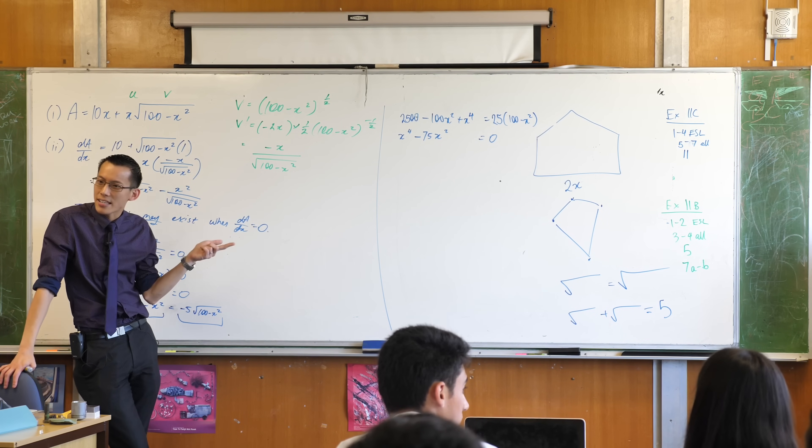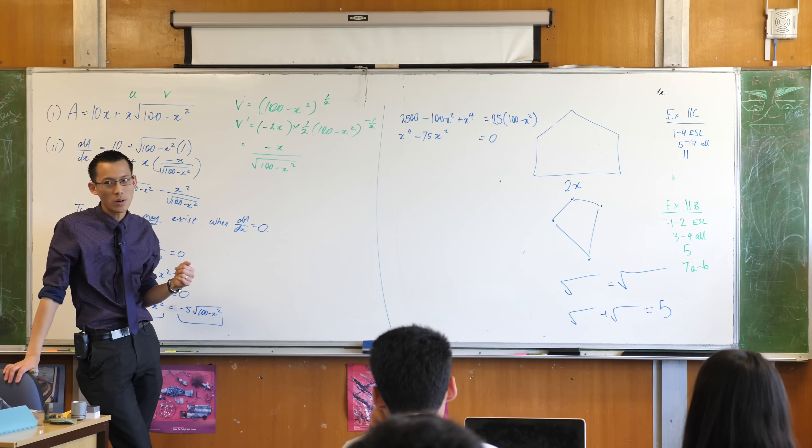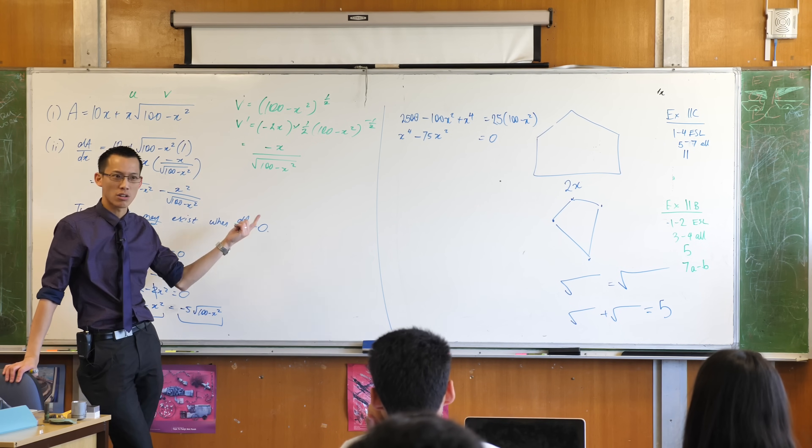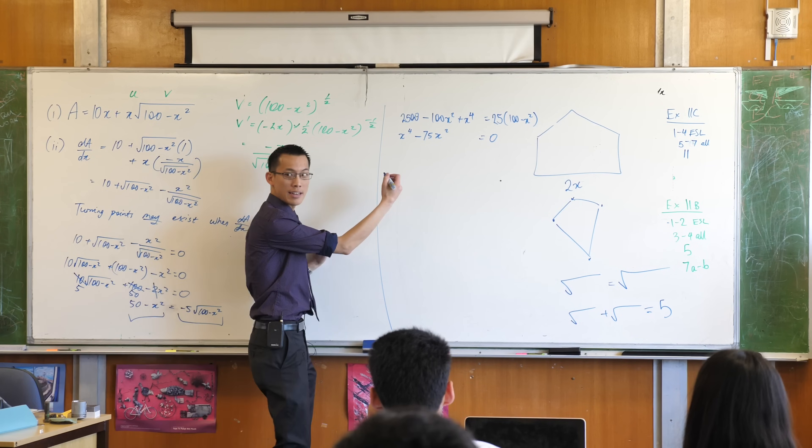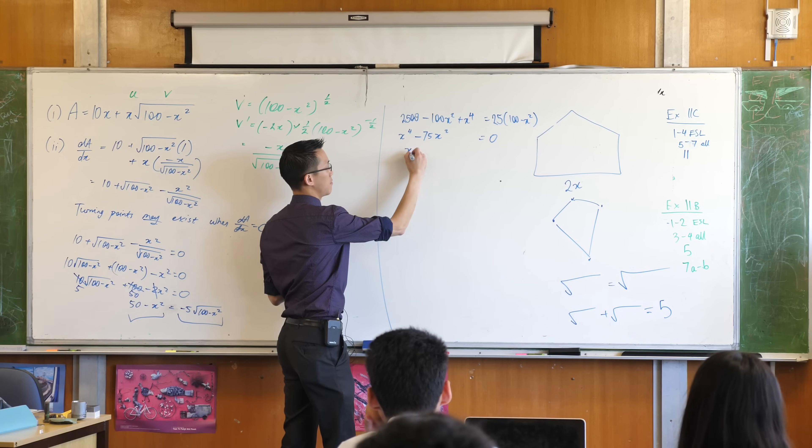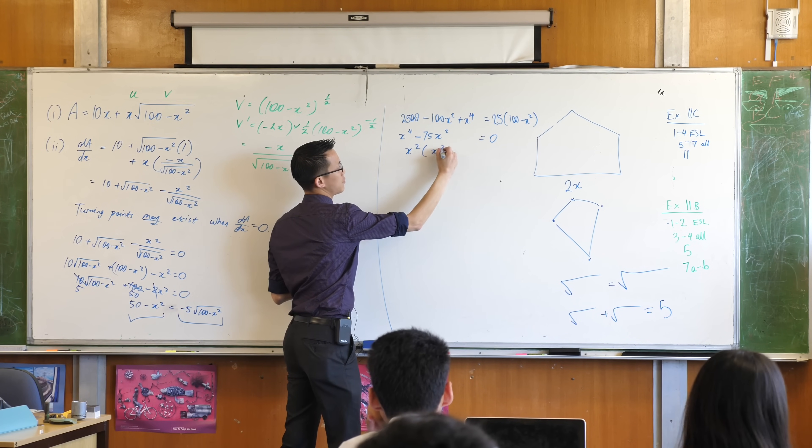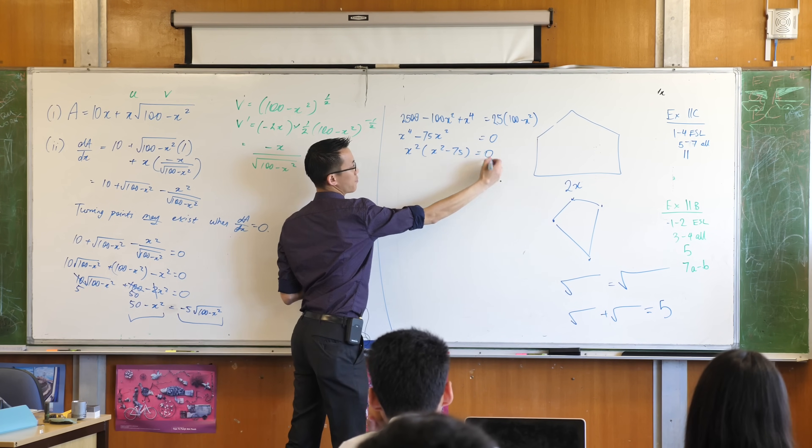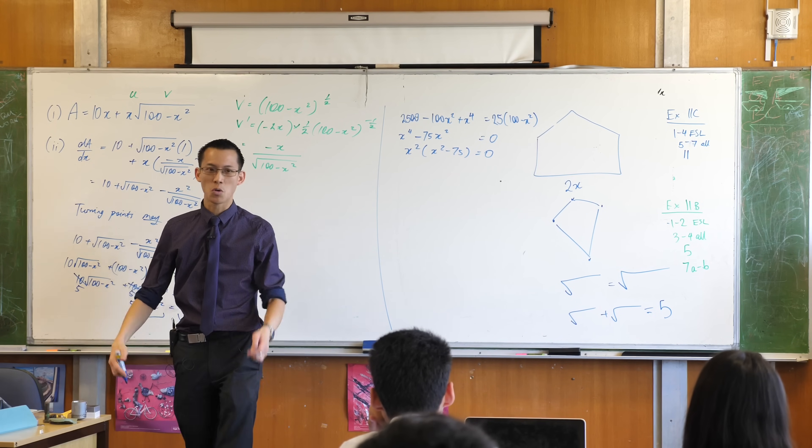Yes, it's a quartic. But it's a quartic that is very easy to tame. Because look, I can just pull out a common factor, right? Namely, x squared. That leaves me with x squared take away 75. And this is quite doable, right?